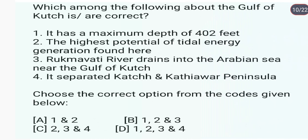Which of the following about the Gulf of Kachchh is correct? It has a maximum depth of 402 feet — bilkul theek. The highest potential of tidal energy generation is found here — bilkul theek. Rukmavati river drains into the Arabian Sea near the Gulf of Kachchh — ye bhi theek hai. It separates Kachchh and Kathiawar Peninsula — ye bhi theek hai. So the answer is D.